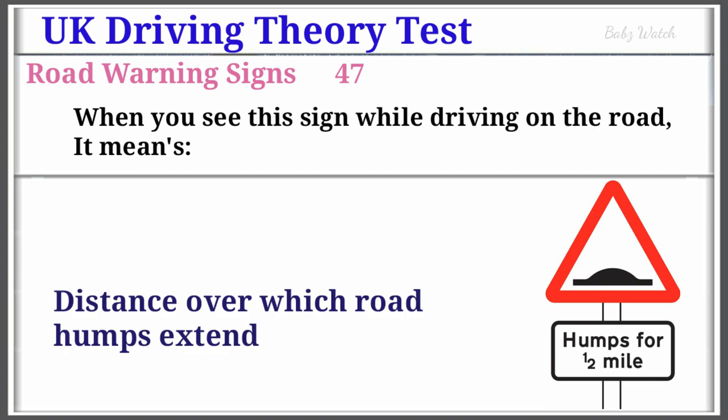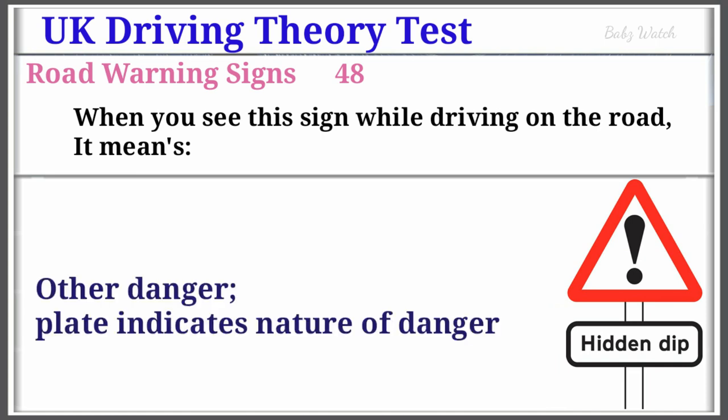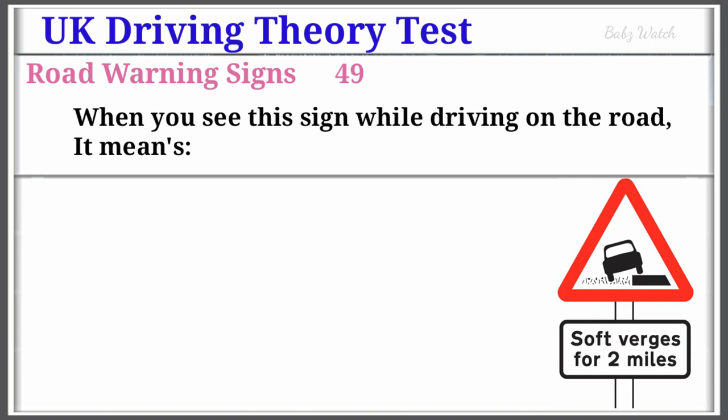UK Driving Theory Test Road Warning Sign Number 48: When you see this sign while driving on the road, it means Other Danger — plate indicates nature of danger. Warning Sign Number 49: When you see this sign while driving on the road, it means Soft Verges.